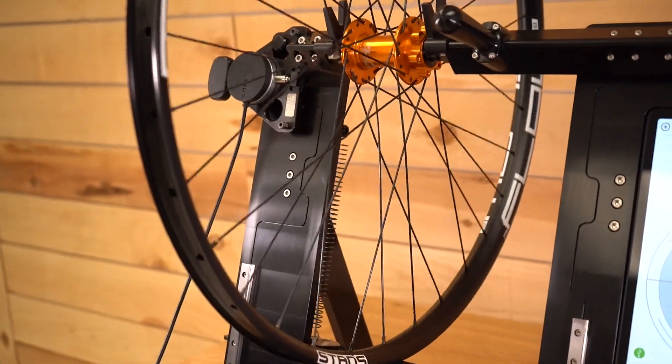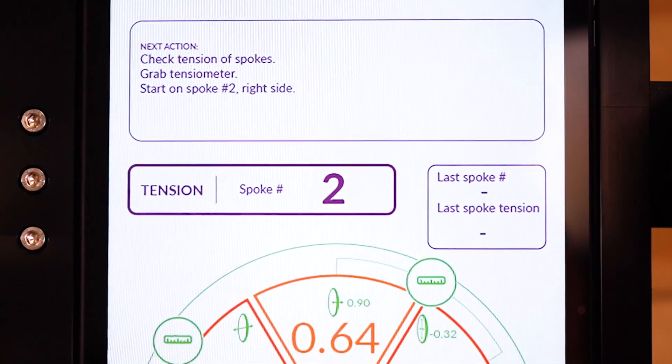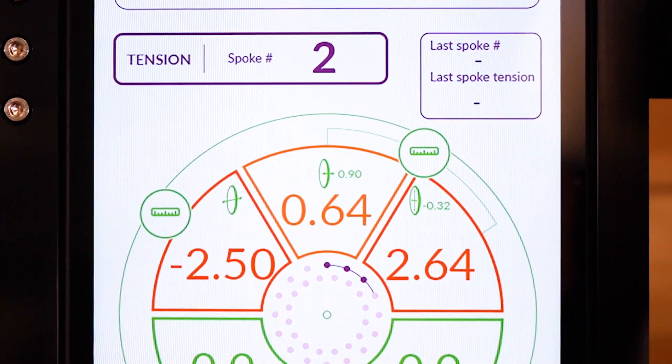At this stage, the system has collected a complete picture of the wheel's lateral run-out, radial run-out, and dish.